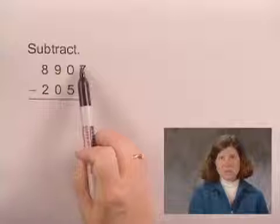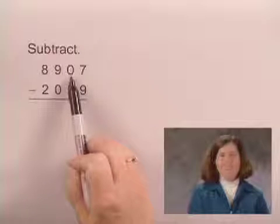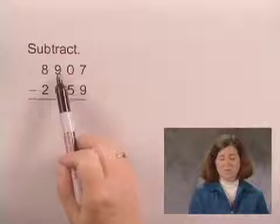We want to borrow some ones, but we can't borrow any from the tens because there's zero tens. So we move to the hundred column.